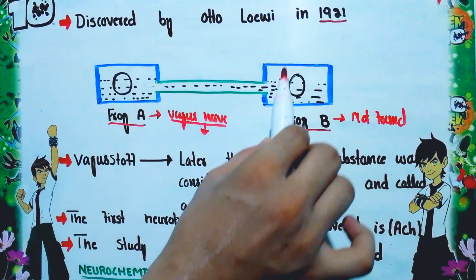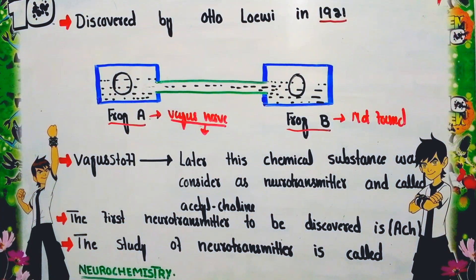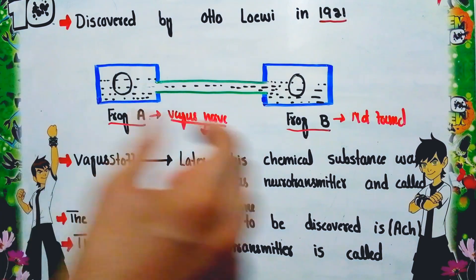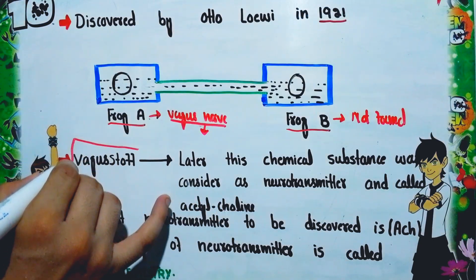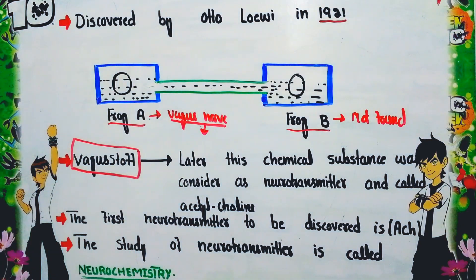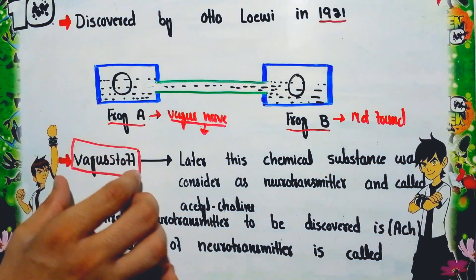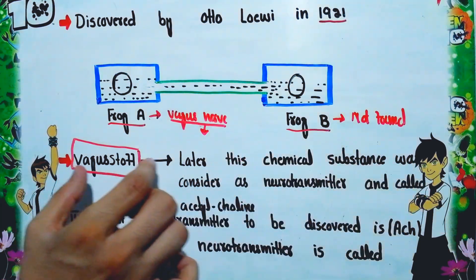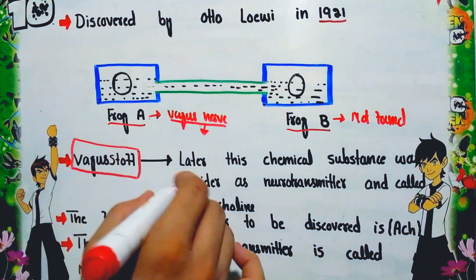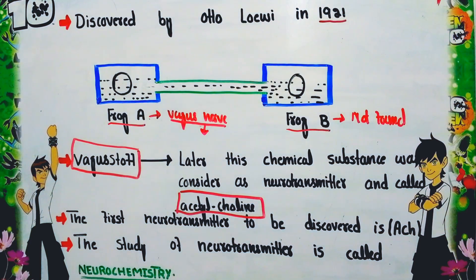From this observation, Otto Loewi concluded that a chemical substance present in the first chamber was transferred into the second chamber and was able to slow down the heart rate of Frog B. He called this chemical substance 'Vagusstoff' — an earlier name used for the neurotransmitter. This chemical substance was later identified as acetylcholine.